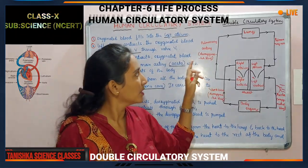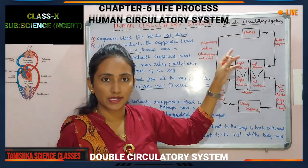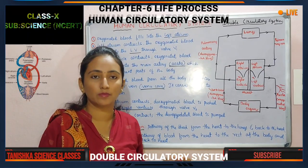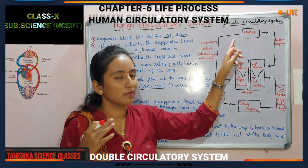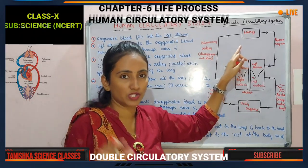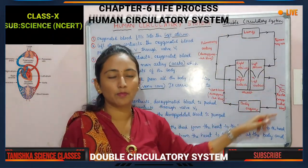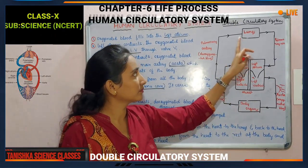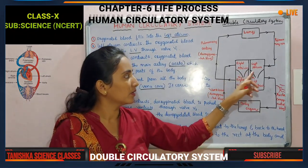Why does it go to the lungs? For the oxygen — because here the blood is deoxygenated and contains carbon dioxide. So it goes to the lungs for the oxygenation purpose. The waste product carbon dioxide is removed out in the process of respiration. Then the blood is again mixed with oxygen. It will come back through the pulmonary vein to the left atrium — completing one full cycle.